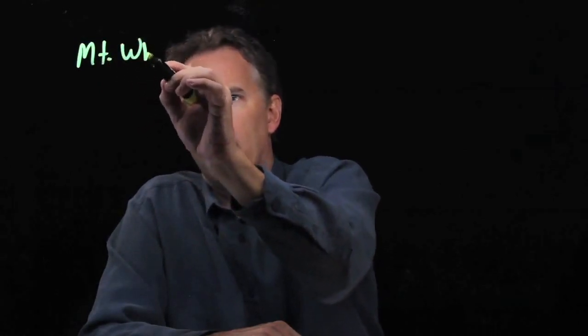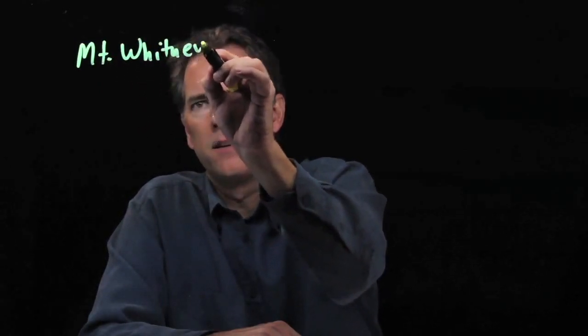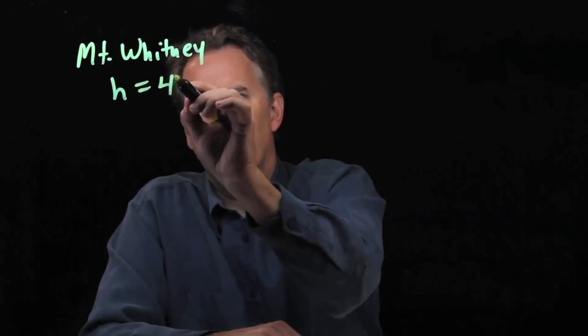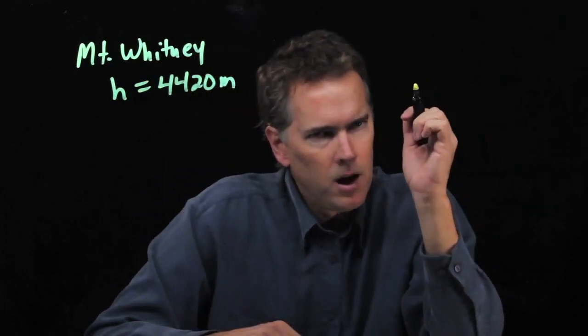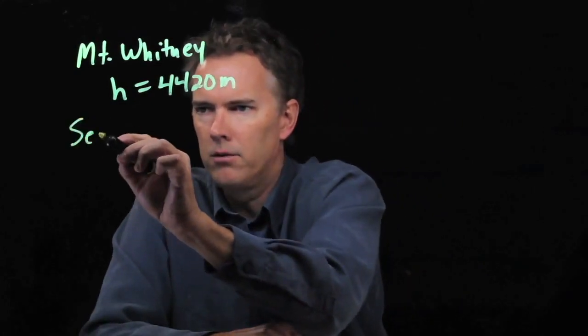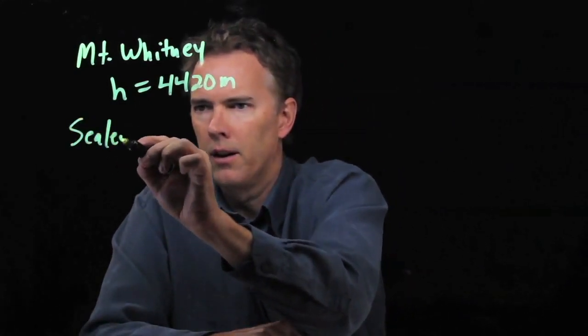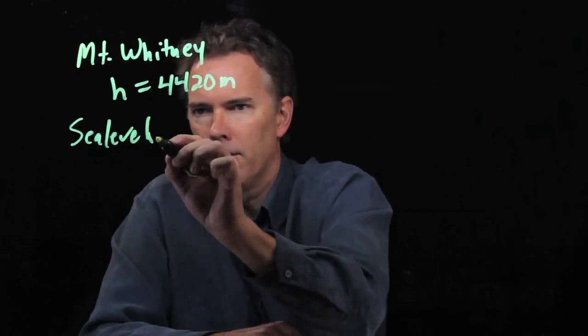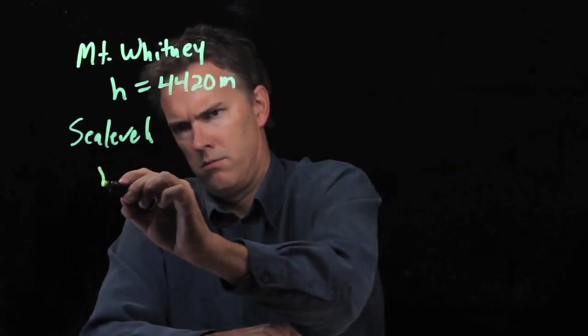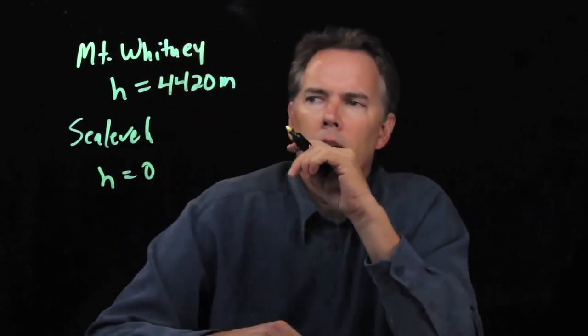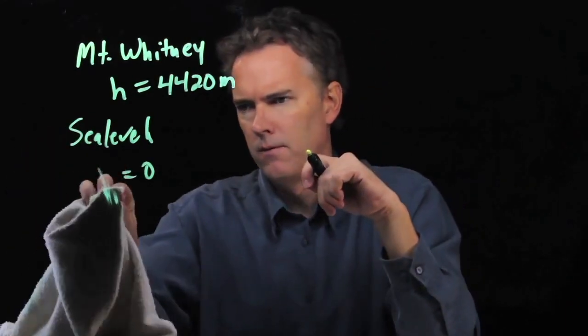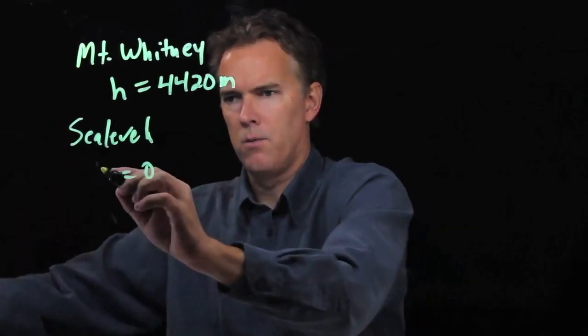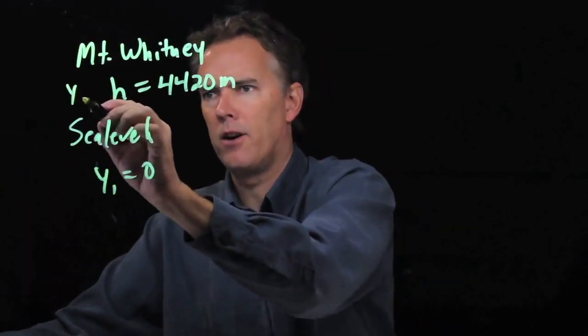Okay, so what do we know? We know that Mount Whitney has a height of 4420 meters. We know that at sea level you are of course a height of zero. And so we'll just call this y initial and we'll call this one y final.